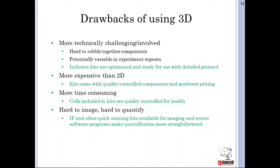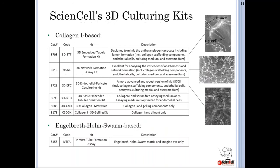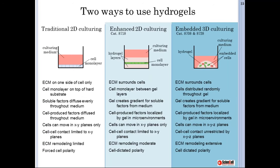We'll now talk about how Science Cell 3D kits address some of these concerns. While there are many 3D kits on the market, ours are more streamlined and inclusive, coming with all components necessary to get started — including primary cells, specialty maintenance media, serum-free 3D culturing medium, and detailed protocols. For this section, we'll focus on our endothelial tubule formation kits, which utilize rat tail collagen 1 as a hydrogel scaffold, since collagen 1 is highly represented in vascular ECM.